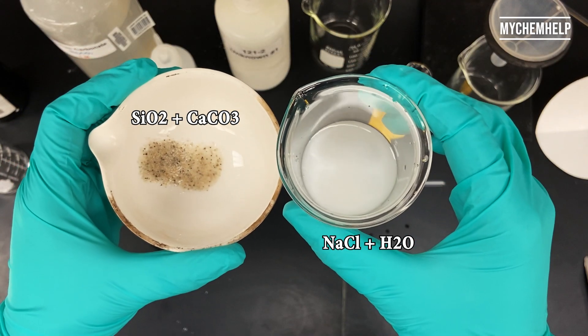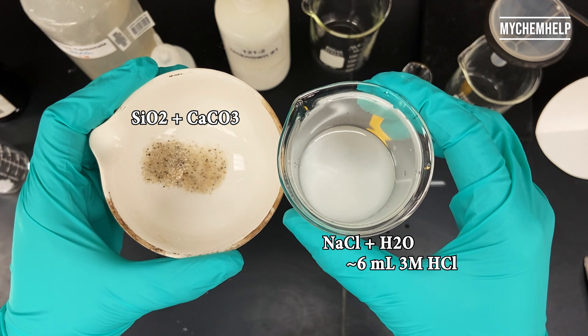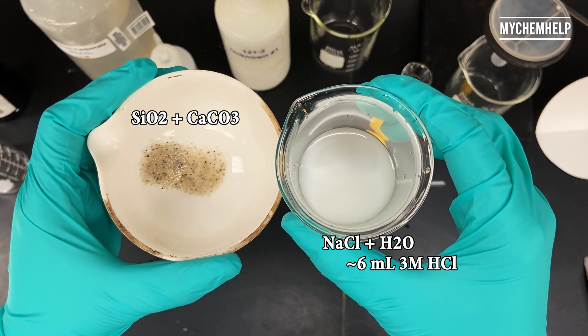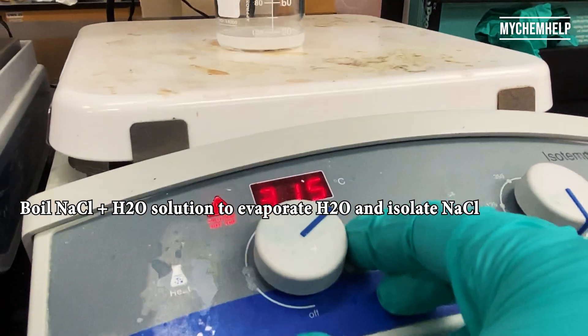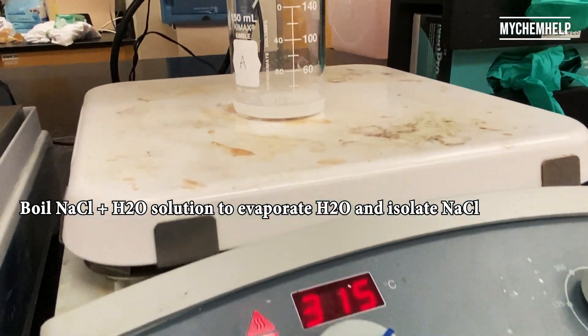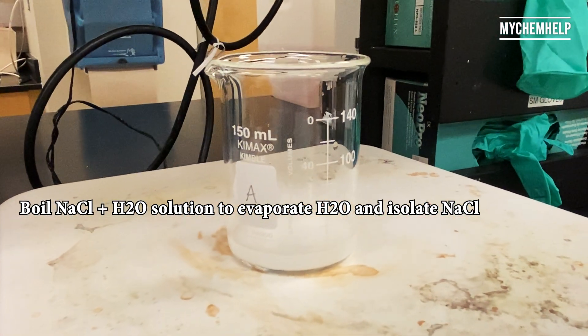Okay, and so what's left in the evaporating dish is silicon dioxide and calcium carbonate, and then we have the aqueous sodium chloride solution in the beaker. Now time to boil that and evaporate the water and isolate the sodium chloride.